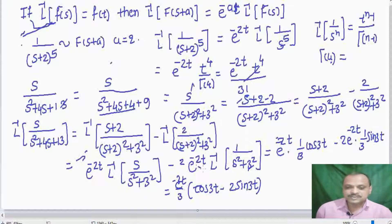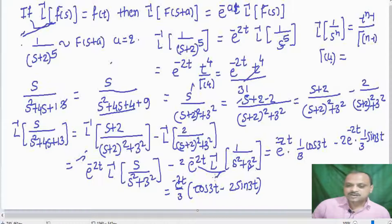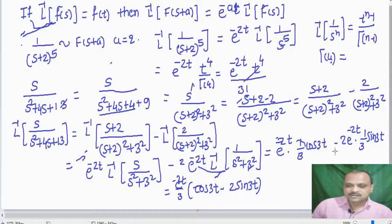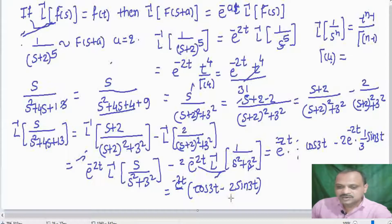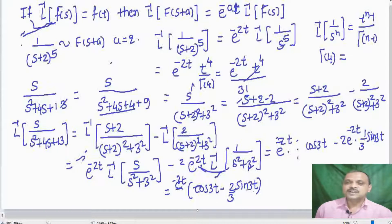Let me check the standard formula for S divided by S squared plus A squared. The L inverse of S over S squared plus 3 squared is cos of 3T only, not 1 over 3 times cos 3T. So we remove that factor. The correct final answer is e raised to minus 2T into cos of 3T minus 2 by 3 into sin of 3T.